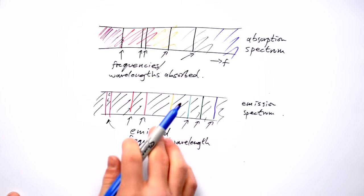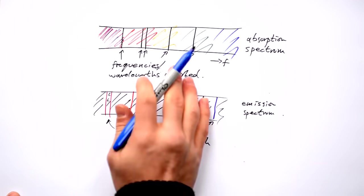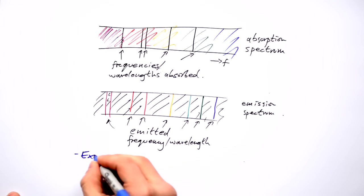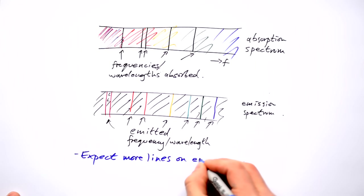I've drawn an absorption spectrum and emission spectrum for two different elements here. But if you did have an absorption spectrum and an emission spectrum, would they be exactly the same? Well, no, they wouldn't be. You expect more lines on the emission spectrum. Why is that?